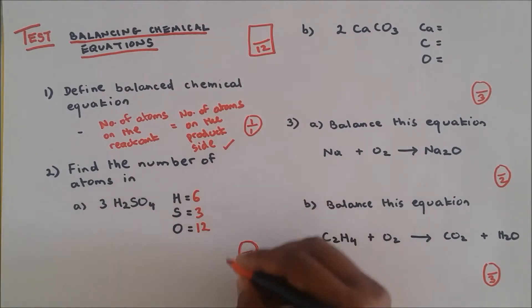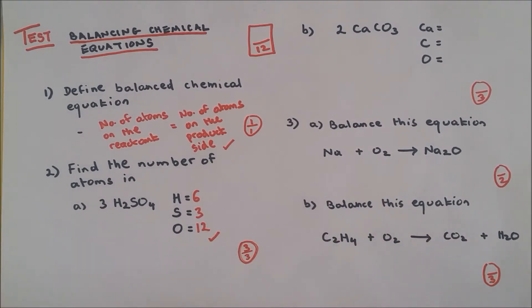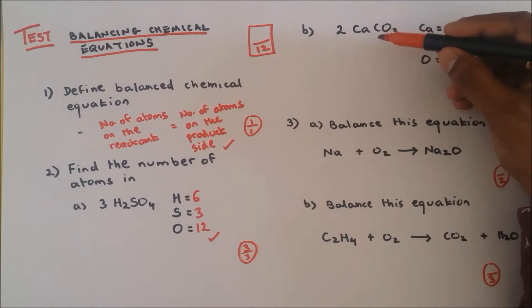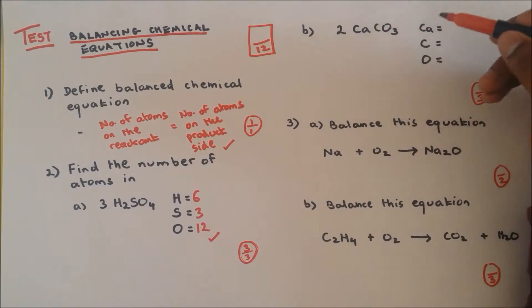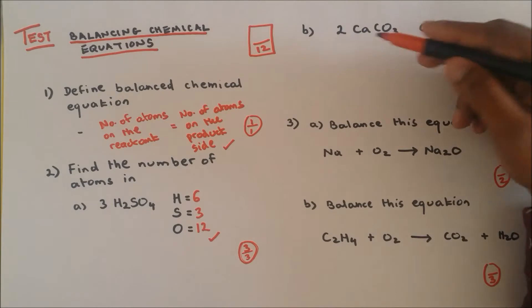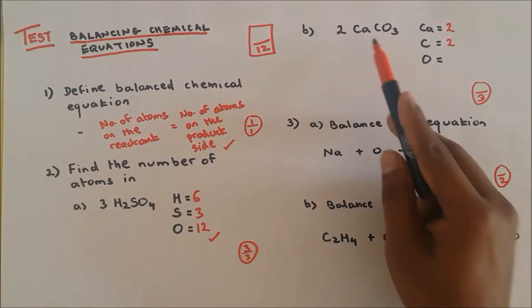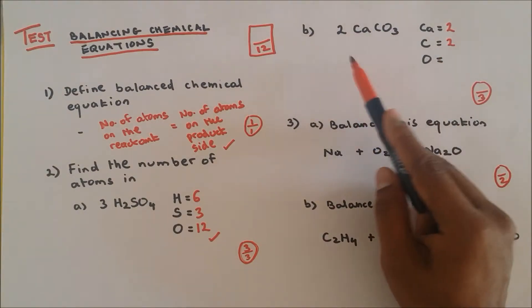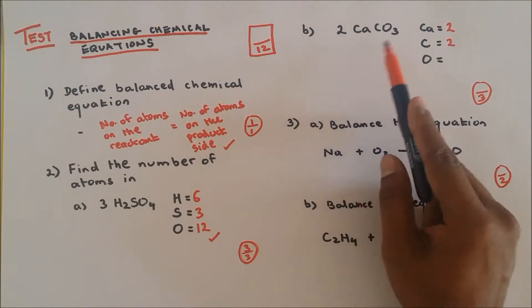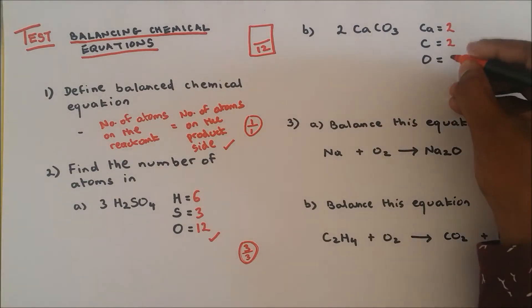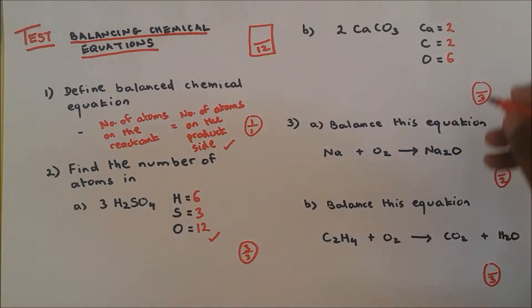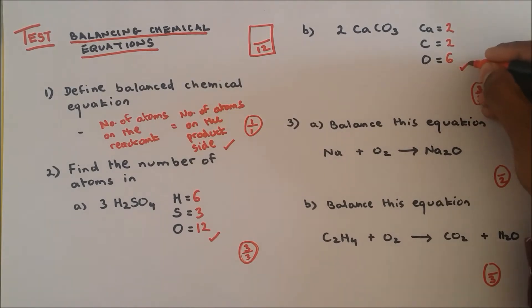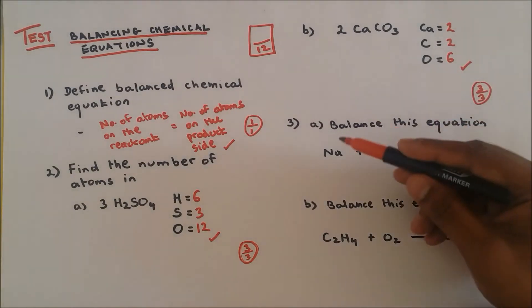Okay, so three out of three. Okay, now part B: Two molecules of calcium carbonate. So this is two atoms of calcium, two carbon. But one molecule of calcium carbonate has three oxygen, so two molecules of calcium carbonate will have six oxygen atoms. So it's three out of three, well done.